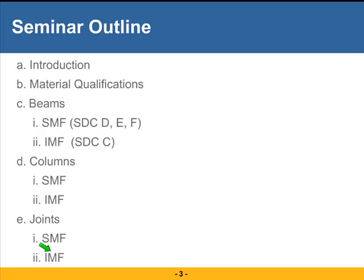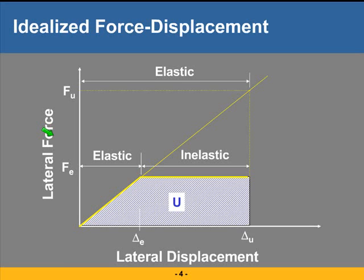The special detailing is a minimum in design categories D, E, and F. Intermediate detailing is a minimum in design category C. That's something I will talk about next in a little bit more detail.